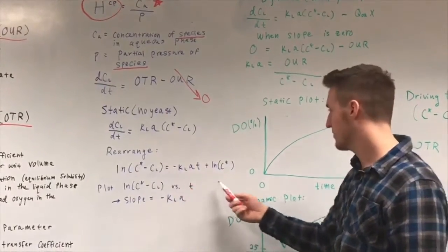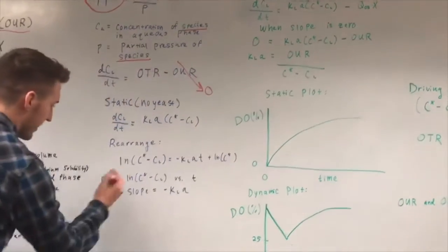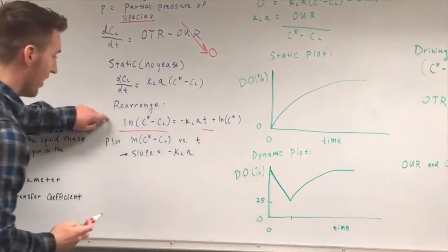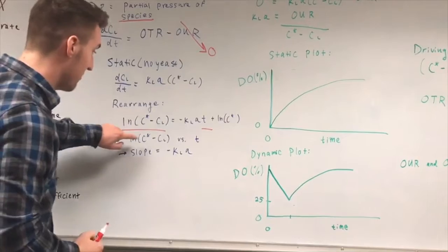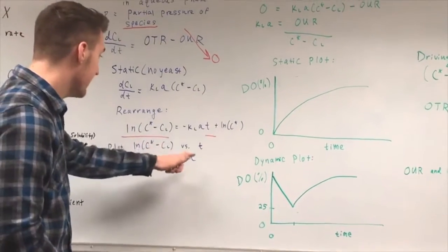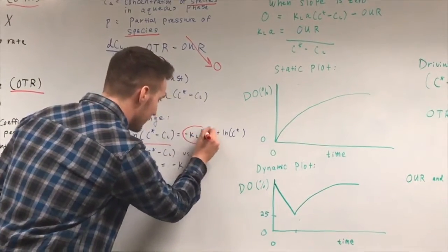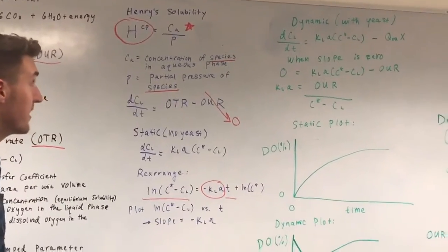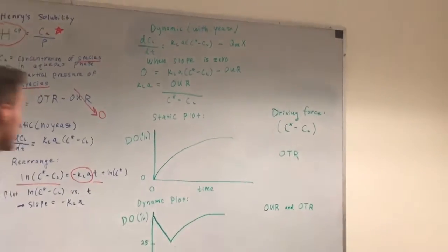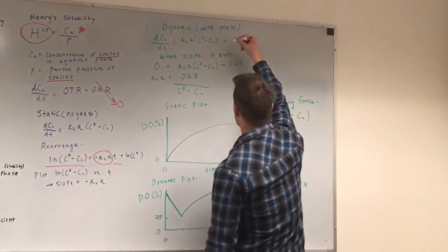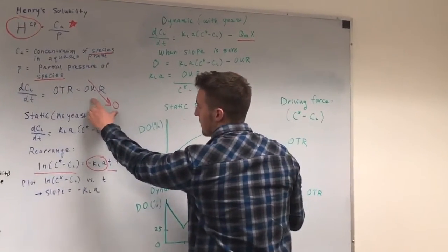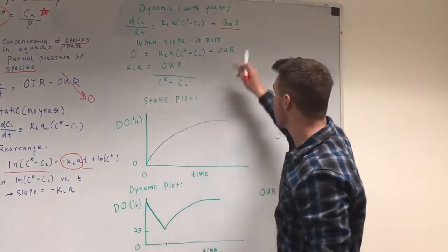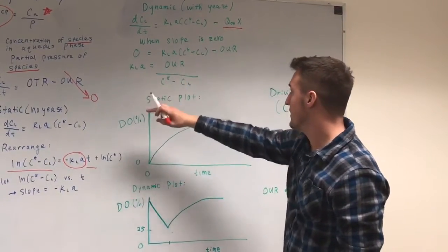Substituting gives an equation that can be rearranged into linear y equals mx plus b form. Plotting y versus x — in this case the natural log of (C* minus CL) versus time — gives a slope of negative KLa. The dynamic calculation is more complex because the oxygen uptake rate term cannot be crossed out when yeast is present; both OTR and OUR occur simultaneously and cannot be rearranged as easily.